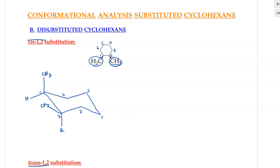Now let's put in the hydrogens for the rest of the molecule. For carbon 3, the axial is right there and here is the equatorial. For carbon 4, this will be the equatorial and this will be the axial. For carbon 5, this is the equatorial and this will be the axial. For carbon 6, this will be the equatorial, and here is the hydrogen equatorial. Make sure you feel comfortable putting all of the groups in here.